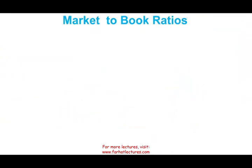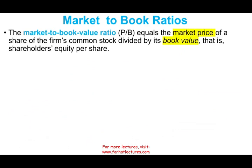Let's start by looking at the market to book ratio, or more specifically, the price to book ratio. How do we compute this ratio? Simply put, we're going to take the market price of a share divided by the book value per share. It's important to understand how the book value is computed, because I'm going to take this ratio and dissect it a little bit.